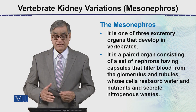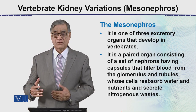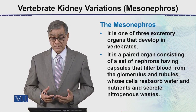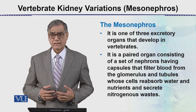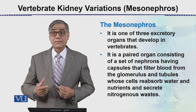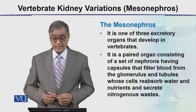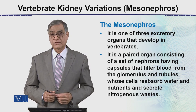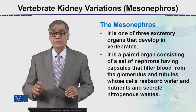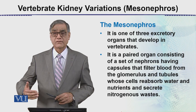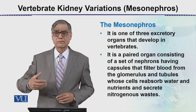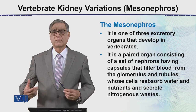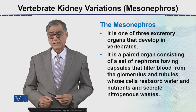The mesonephros is the intermediate stage, and in some animals it is the final stage. It is a paired organ consisting of a set of nephrons having capsules that filter blood from the glomerulus, and tubules whose cells reabsorb water and nutrients and secrete nitrogenous waste — a concise summary of the excretory process.